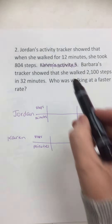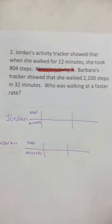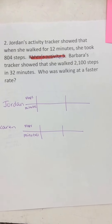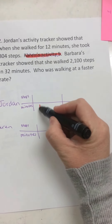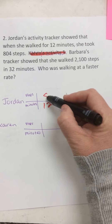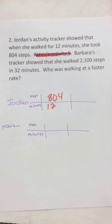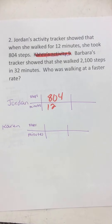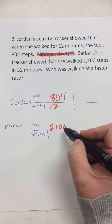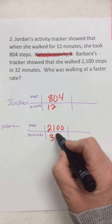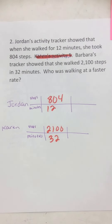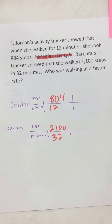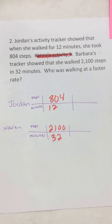Number two. Jordan's activity tracker shows that when she walks for 12 minutes, she takes 804 steps. Barbara's tracker shows that when she walks 2,100 steps, it takes her 32 minutes. Who is walking at a faster rate? That means steps per minute — rate means comparing the two things, so steps per minute.